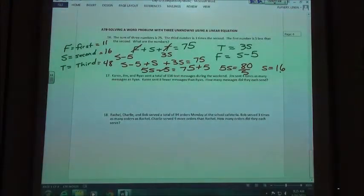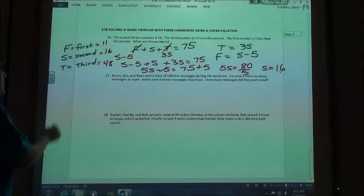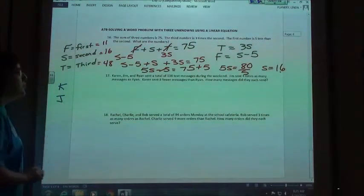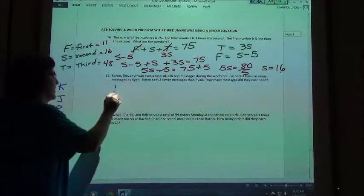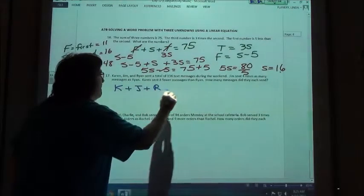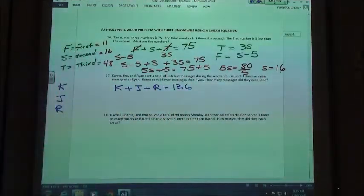So 17 says, Karen, Jim, and Ryan sent a total of 136 text messages during the weekend. Jim sent four times as many messages as Ryan. Karen sent eight fewer messages than Ryan. How many messages did they each send? So we'll use K for Karen, J for Jim, and R for Ryan, just so we know who's who. So if Karen, Jim, and Ryan sent a total of 136 text messages, how can I write that equation? K plus J plus R equals 136.